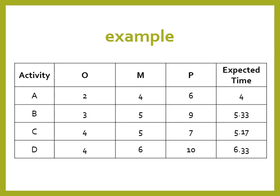For the activity list example: the optimistic time (favorable situation) is 3 weeks; the most likely normal time (normal situation) is 5 weeks; and the pessimistic time (unfavorable situation) is 9 weeks. These values are entered into the expected time formula to compute the expected duration for each activity.